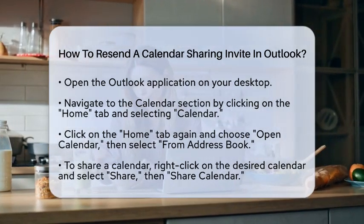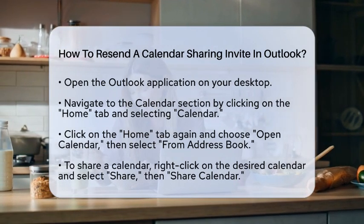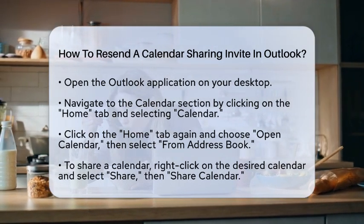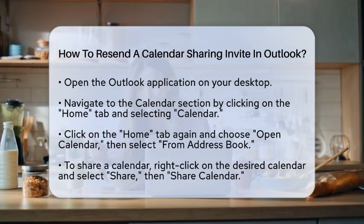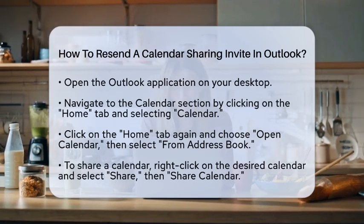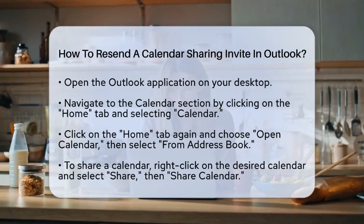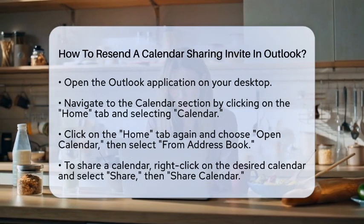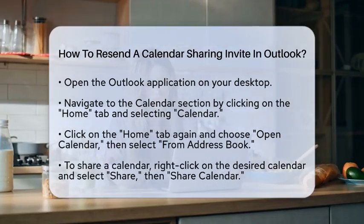First, open your Outlook application on your desktop — this is where all the magic happens. Once you are in, navigate to the Calendar section. You can find this by clicking on the Home tab and selecting Calendar from the navigation pane.